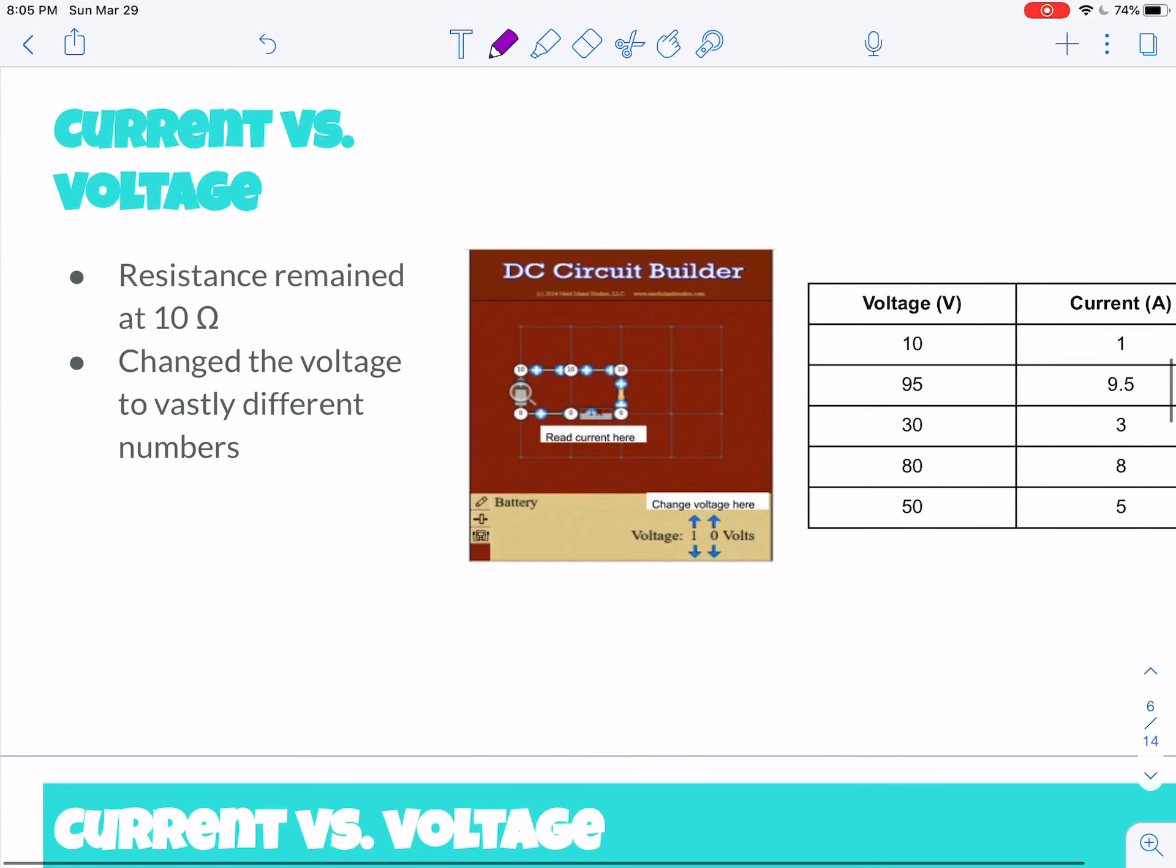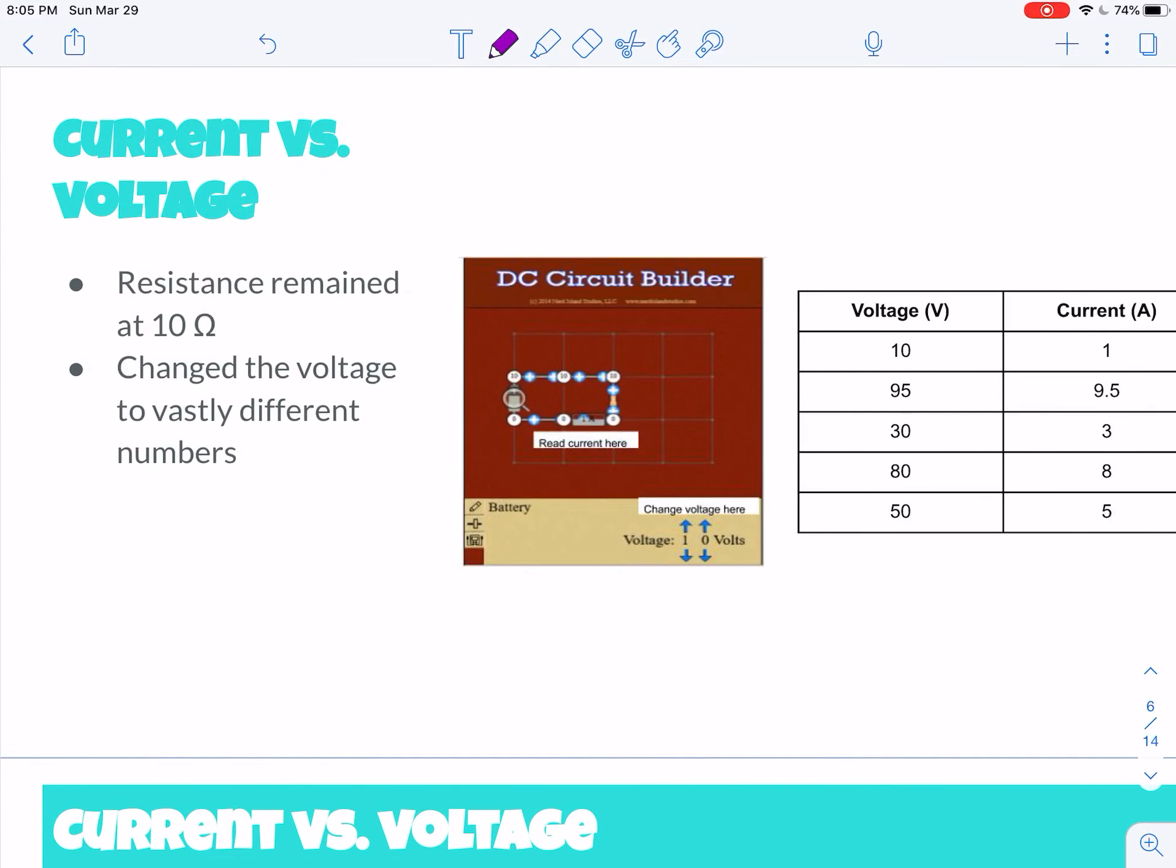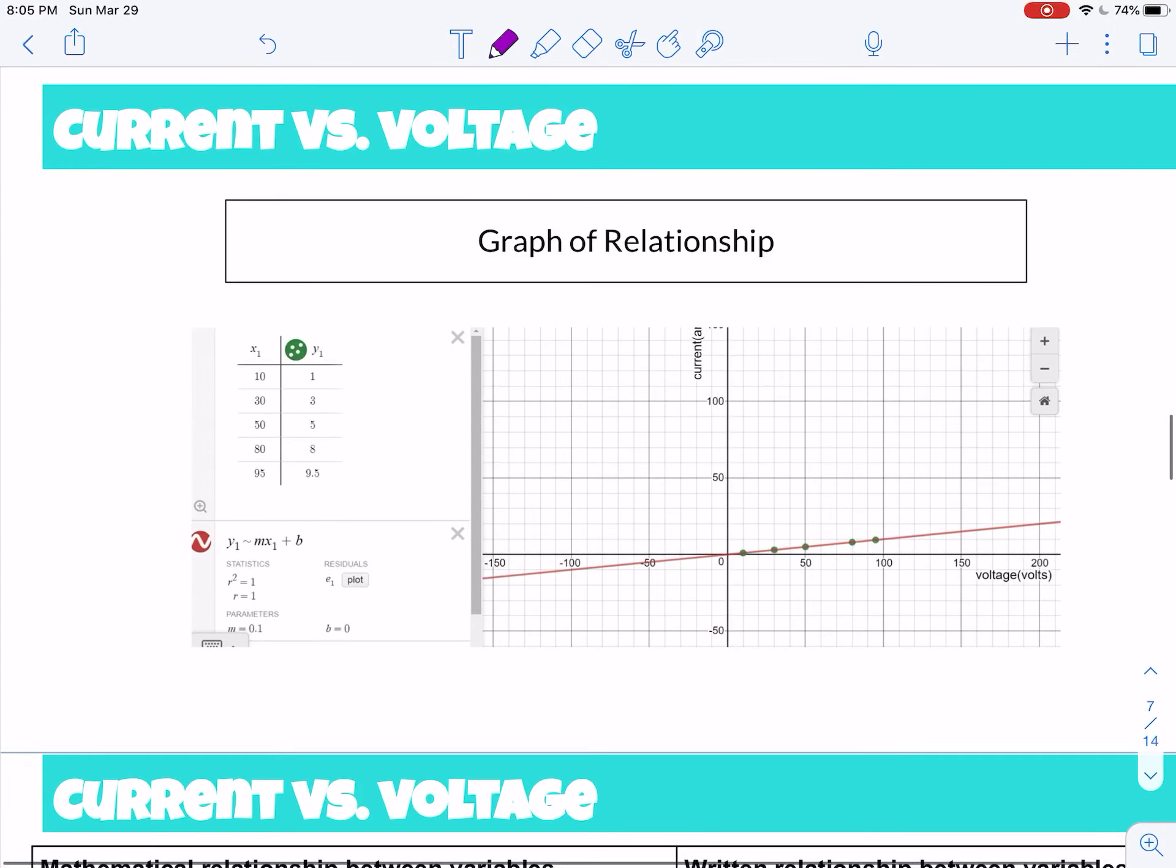All right, so in the first part, hopefully you had this. Hopefully you kept your resistance constant. I think I told you 10 Ohms was a good thing to keep, whatever I said in the thing. And you change your voltages, okay? And you measured the current, okay? This was your battery voltage, and the current was from the ammeter, all right? And then you should have gotten a graph like this. Remember this little button right here? If you click that, that will make the graph a little more spread out, okay?